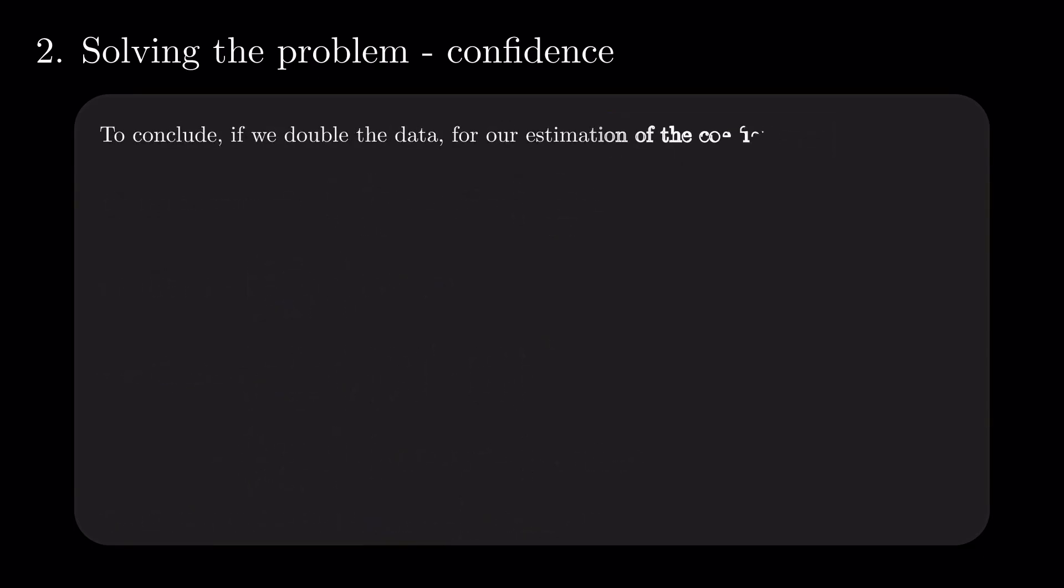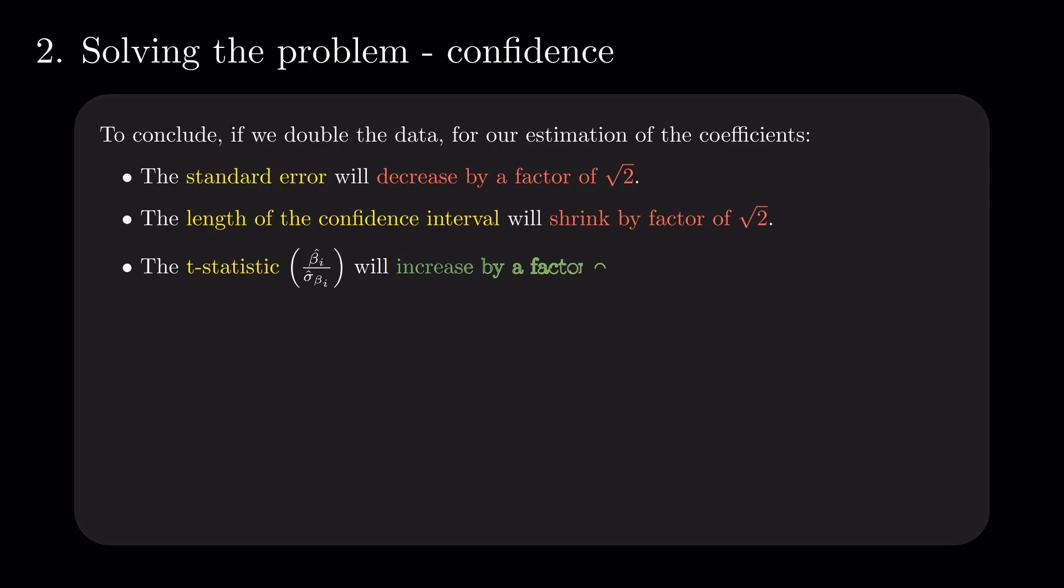The changes in confidence are as follows. The standard error decreases by a factor of square root of 2 as well as the length of the confidence interval. Consequently, the t-statistic will increase by the same ratio, decreasing the p-value accordingly.